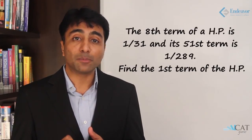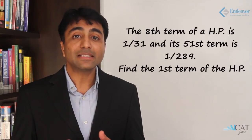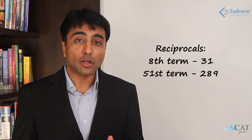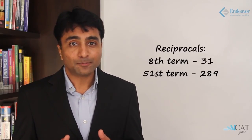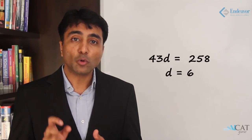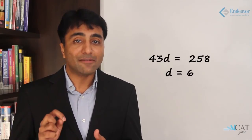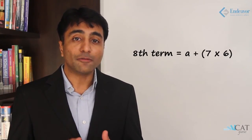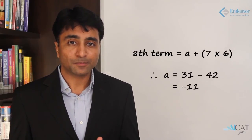We need to learn two concepts: finding the nth term and finding the harmonic mean. For example, if the eighth term of a harmonic progression is 1/31 and the 51st term is 1/289, find the first term. Taking reciprocals gives 31 and 289. There are 43 differences between the 8th and 51st terms, so 43D = 258, giving D = 6. Since the eighth term (reciprocal) = first term + 7D: first term = 31 − 42 = −11.